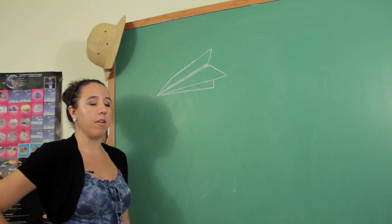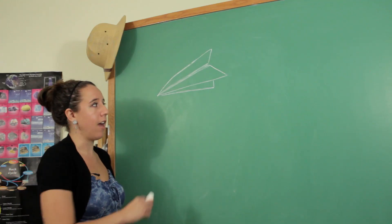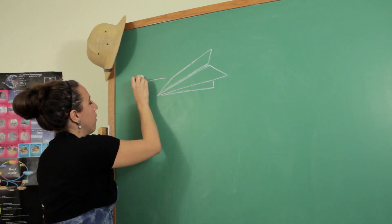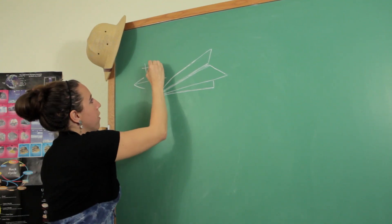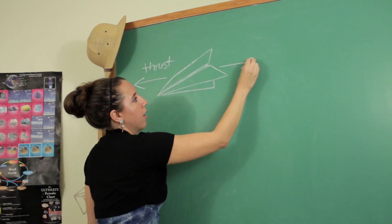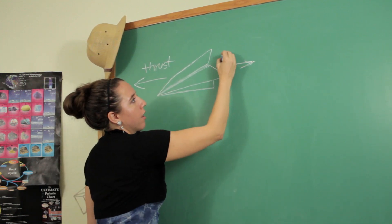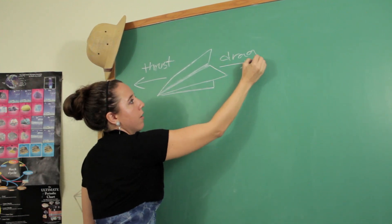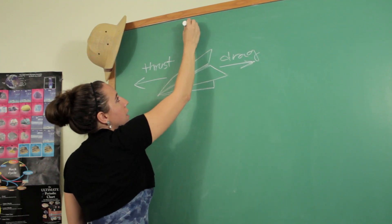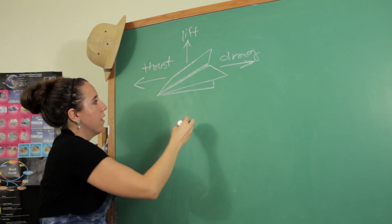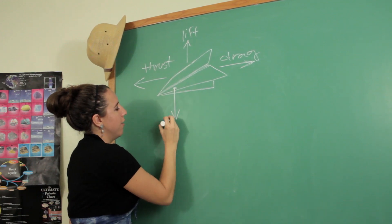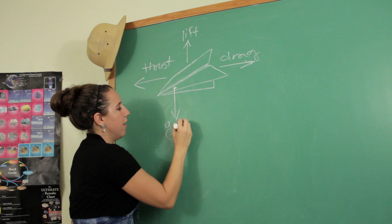It's pretty easy to remember these four things because they act in the four cardinal directions. You have thrust, which is what propels it forward; air drag, which opposes thrust; lift; and lastly gravity, which acts on everything in the universe.